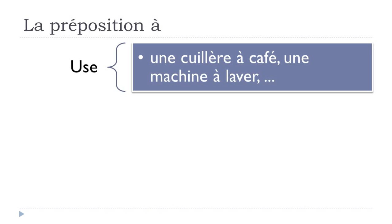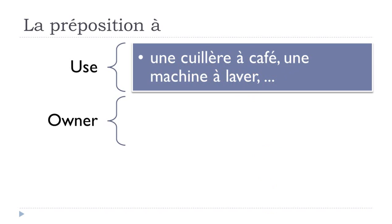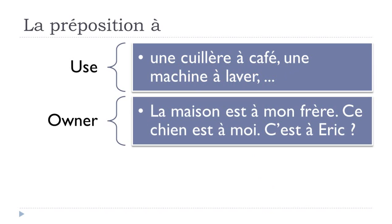You use à to indicate the purpose of an object: une cuillère à café (a coffee spoon), une machine à laver (a washing machine). These expressions use the preposition à to show what the object is used for.